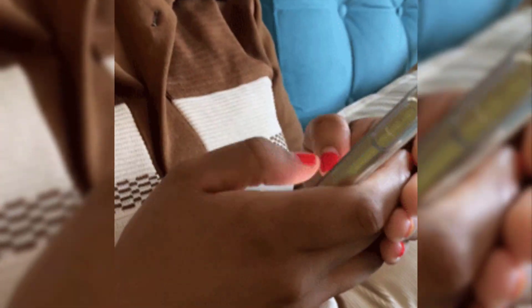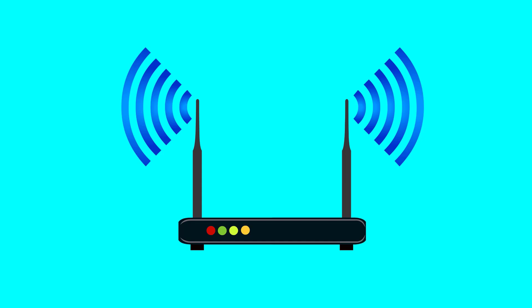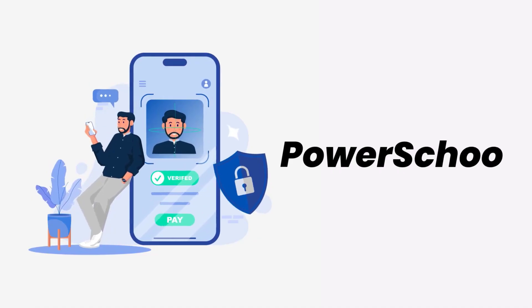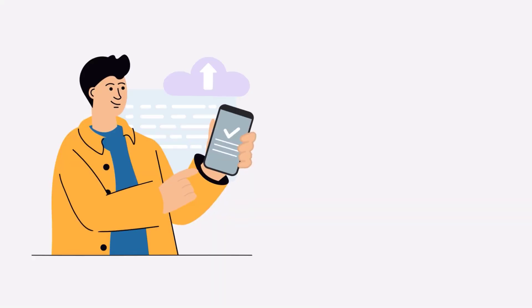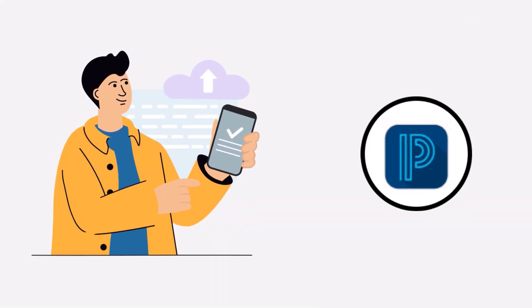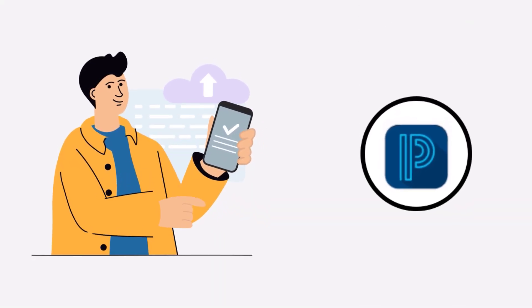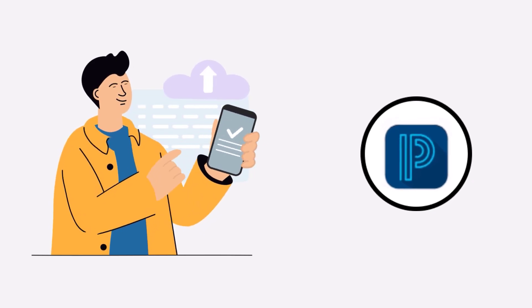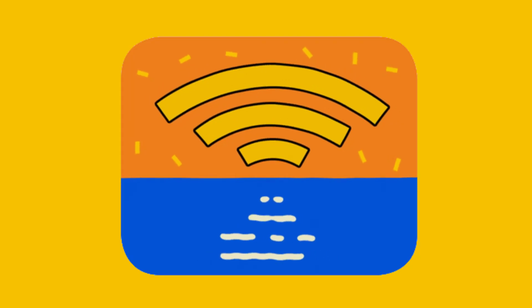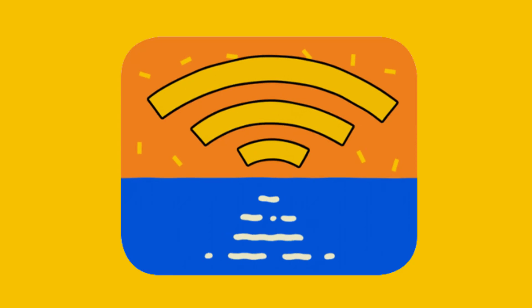It might be possible that you're not able to log in due to a connectivity issue. First of all, you need to make sure you have a strong and stable internet connection. Do a quick test to check if your internet is working by opening up an app that runs on the internet, other than the PowerSchool app, and check if it's working or not.